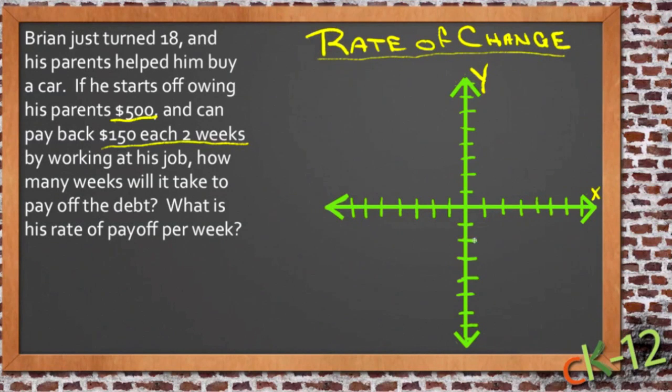So we're going to use an XY graph here. And we're going to put weeks across the bottom. So we'll label this axis weeks. And we're going to put dollars going up, but let's make each tick $100.